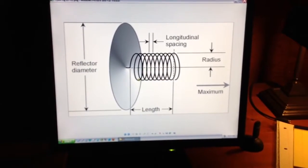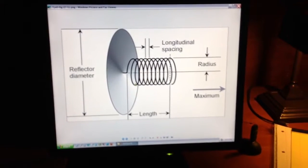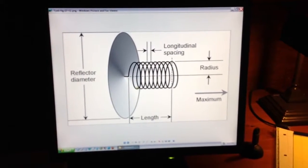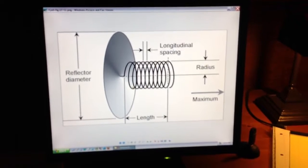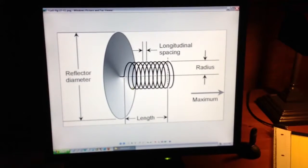But a helical antenna like this, the dimensions, the length, and the longitudinal spacing, and the radius are reasonable fractions of a wavelength.